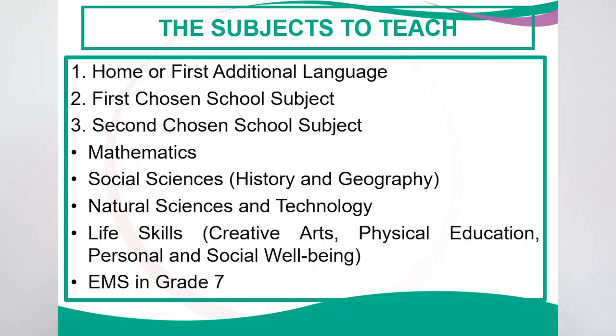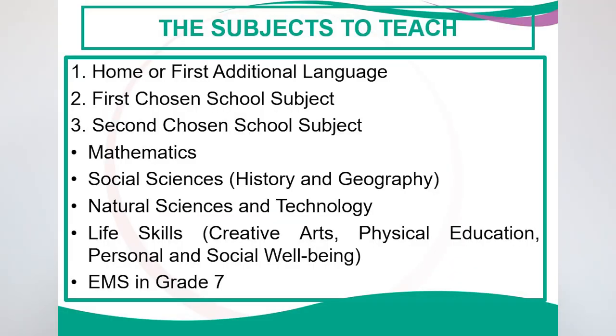For your first chosen school subject, you need to choose amongst the following: mathematics, social science which consists of history and geography, natural sciences and technology, life skills which includes creative arts, physical education, and personal and social well-being.